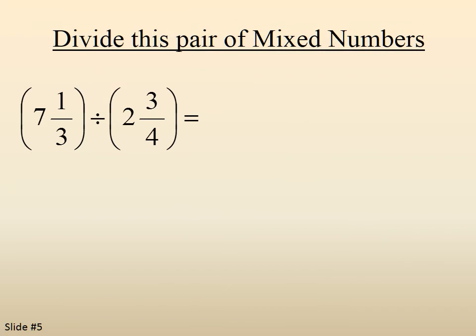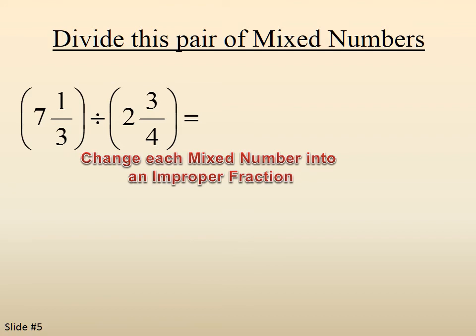Let's try this pair. 7 and 1 third divided by 2 and 3 fourths. We change to improper fractions. So we get 22 thirds divided by 11 fourths.